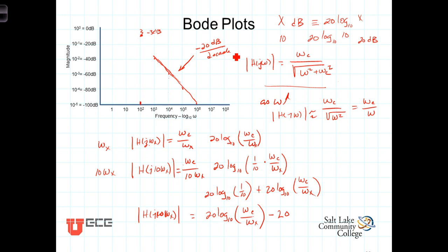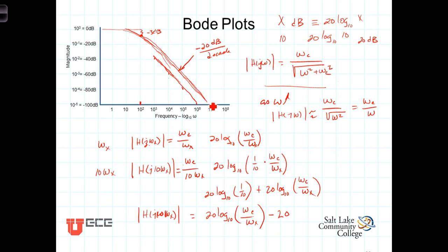So when sketching a Bode plot, you can pretty well just draw a straight line out to the cutoff frequency, and then start a straight line dropping off at 20 dB per decade. After that, you simply note that it's not exactly at the corner — it's actually 3 dB down below the maximum value at the cutoff frequency. With a little bit of sketching, you can easily draw the frequency response on a log-log plot, or Bode plot, for a filter.